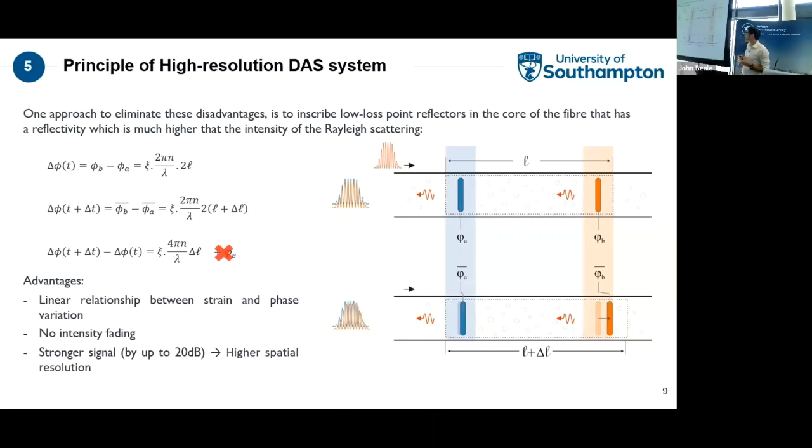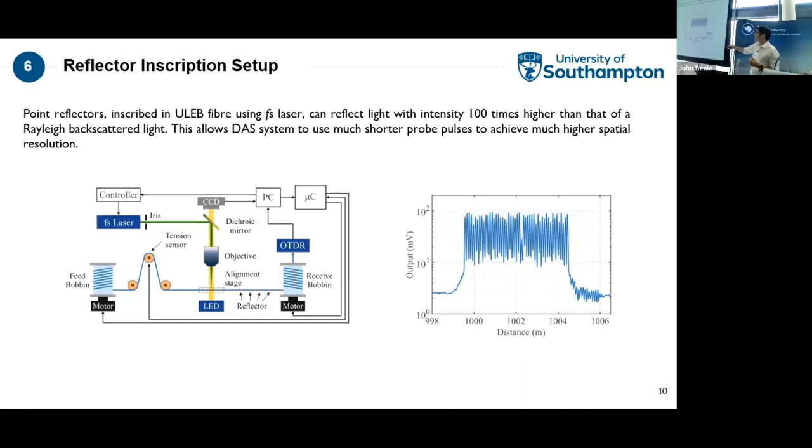And also because we rely on the reflector, we can have them spaced much closer with the similar pulse peak power. So basically this is a setup that we use to put reflectors in the core. I don't go into details, I think it's kind of boring for you. And you can see the reflectors every 10 centimeter in this case in a long fiber.